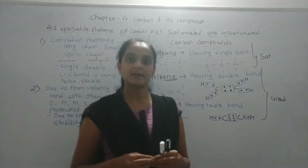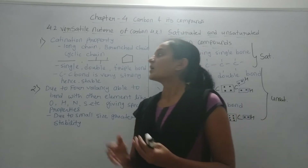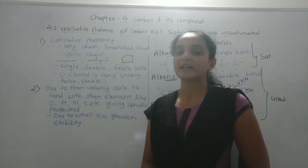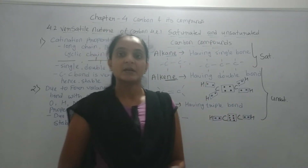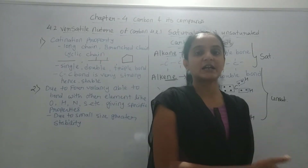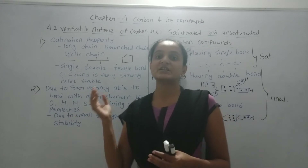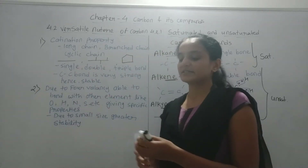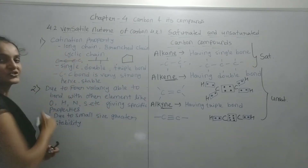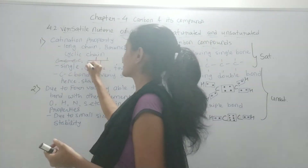Catenation means that carbon can make bonds with other carbon atoms and form long chains, branched chains, and cyclic chains. This unique property is called catenation. A long chain means a number of carbon atoms bonded with each other forming a large chain. Similarly, carbon atoms can bond in a branched form as well.